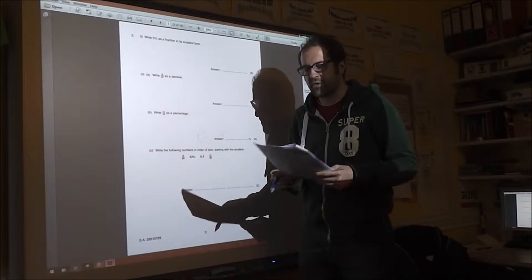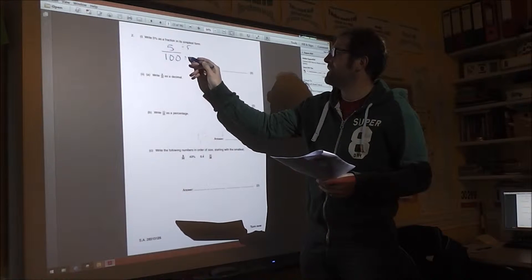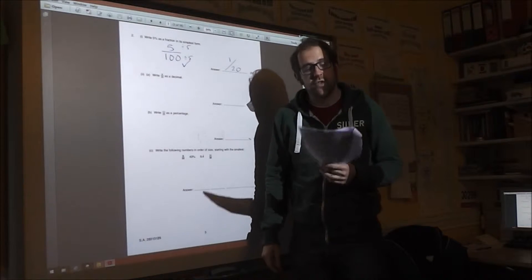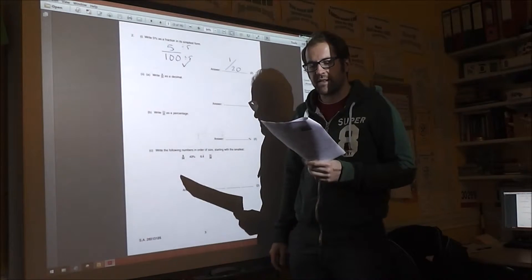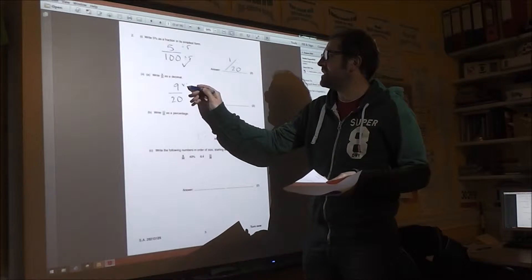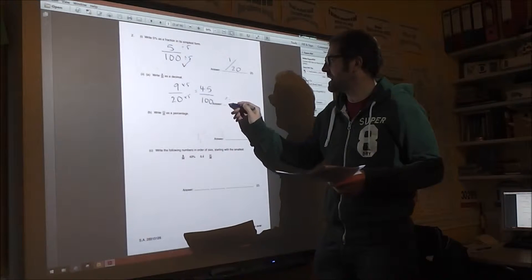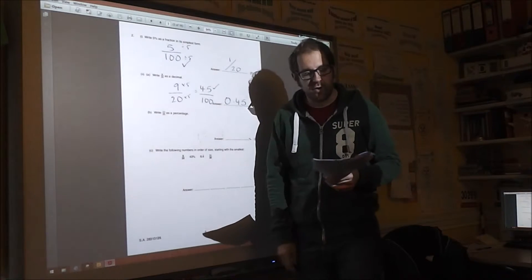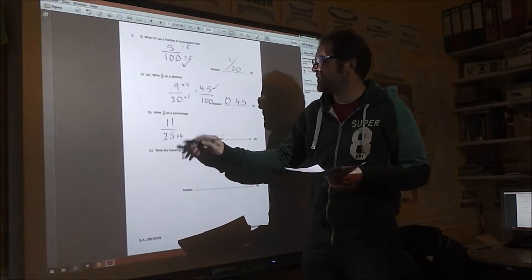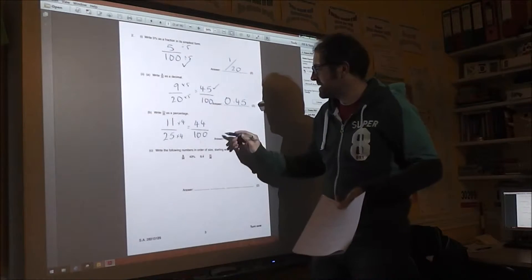Question two is about fractions, decimals and percentages. Five percent as a fraction is five out of 100. These are both divisible by five, and so you get 1/20th. You do need to show your working for this one, even though some people may know that 5% is 1/20th. 9/20ths - you could either do this by a bit of bus stop division. It's easier to make it into hundredths. So it's 45 hundredths, which is then written as 0.45. Again, you need some form of working out there.